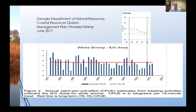For some species, we do have a longer record, albeit from a slightly different size class and habitat type. The Coastal Resource Division's Ecological Monitoring Trawl Survey, or EMTS, spans about 35 years now. Here we see catch-per-unit effort for white shrimp from 1976 to 2016, and you can see two things. First, at least for part of the record, the EMTS data does track the juvenile trawl data to a certain degree. And secondly, it seems that the decline we observed from an eight-year record may just be an artifact of where that sampling occurred within a longer-term cycle of variation in abundance.